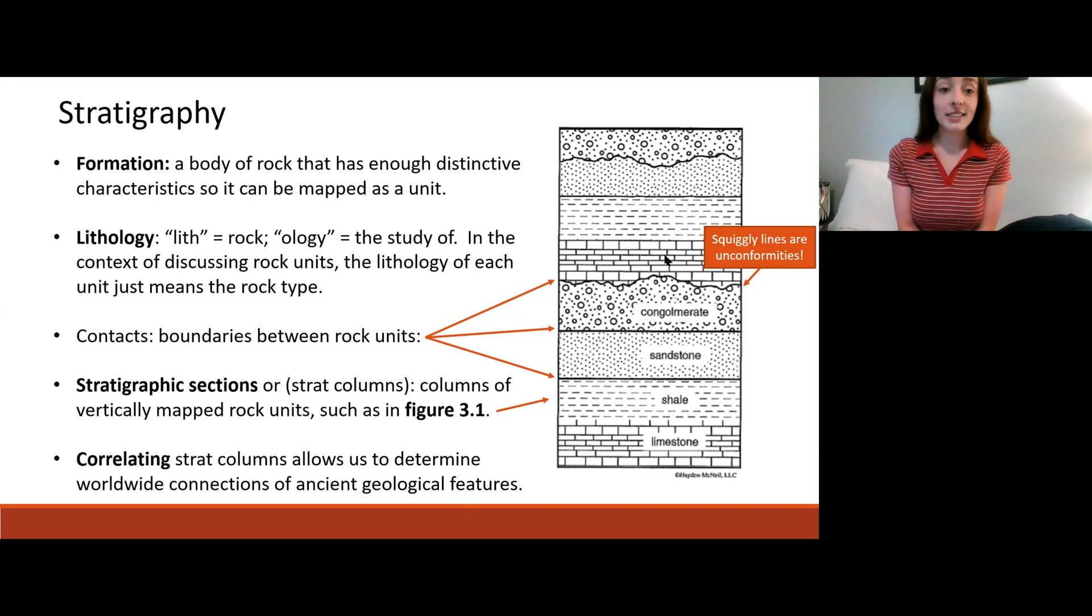A formation is a body of rock that has enough distinctive characteristics so it can be mapped as a unit. A formation is just something we use a lot in geology to say this strata is different than this strata and we're going to classify it as a formation. It's really helpful because then we can name them and talk about them with other people and write about them in papers and people understand what we're talking about.